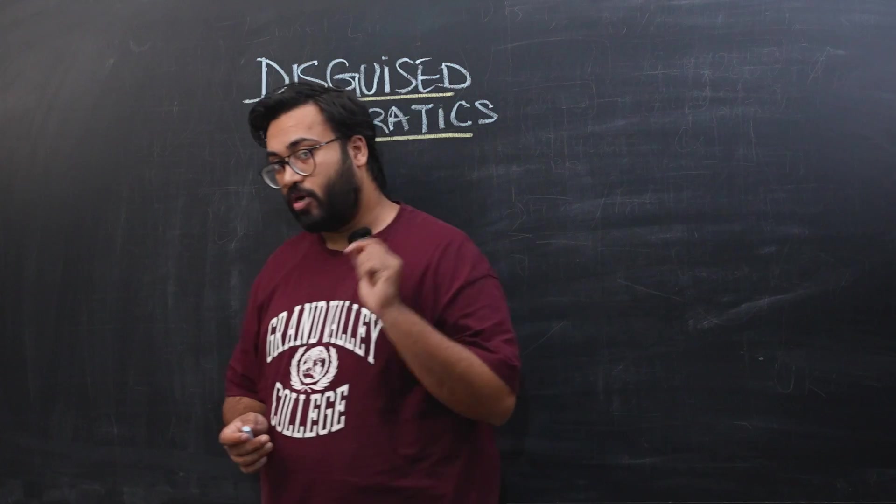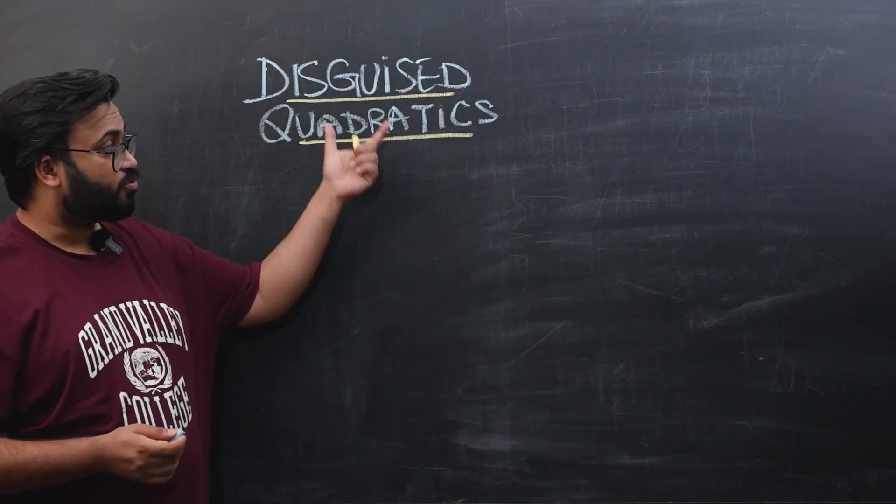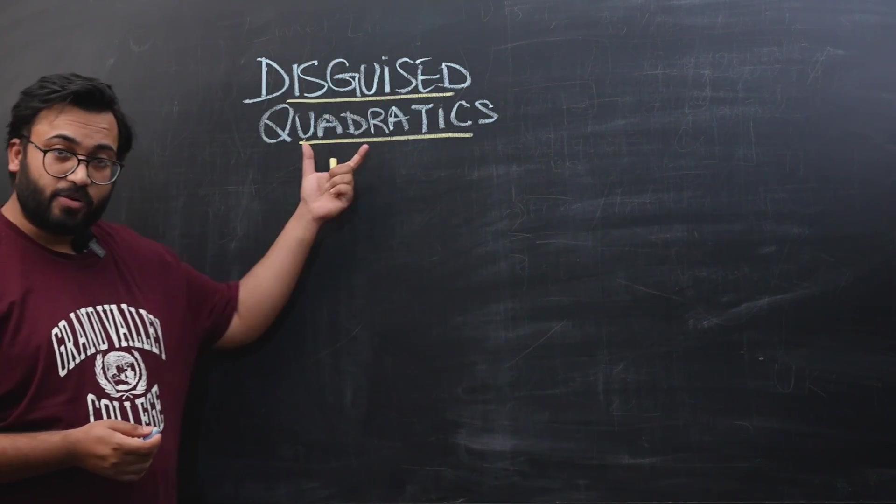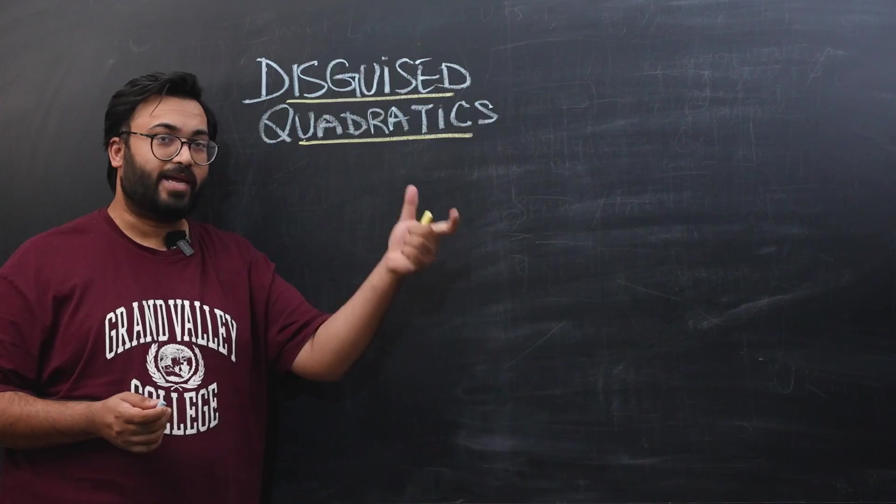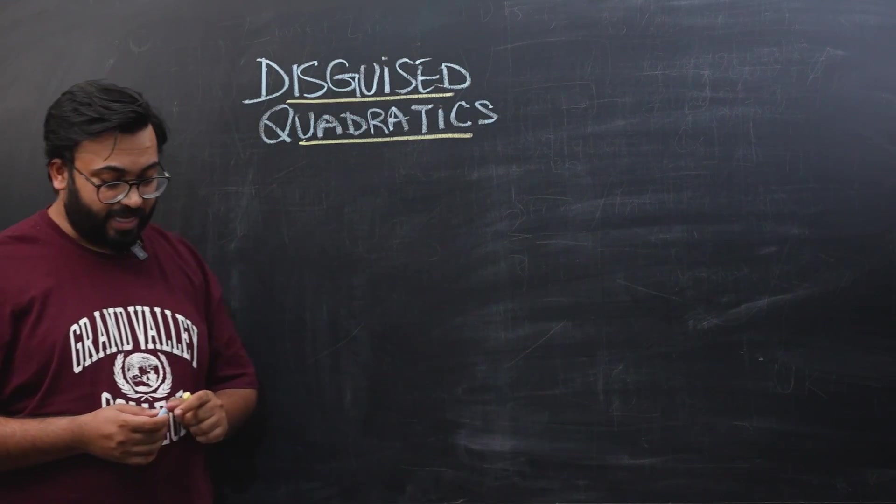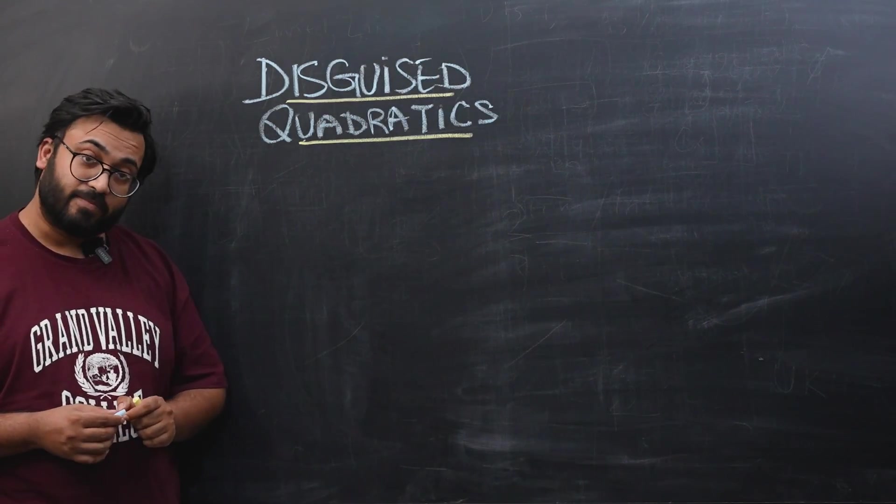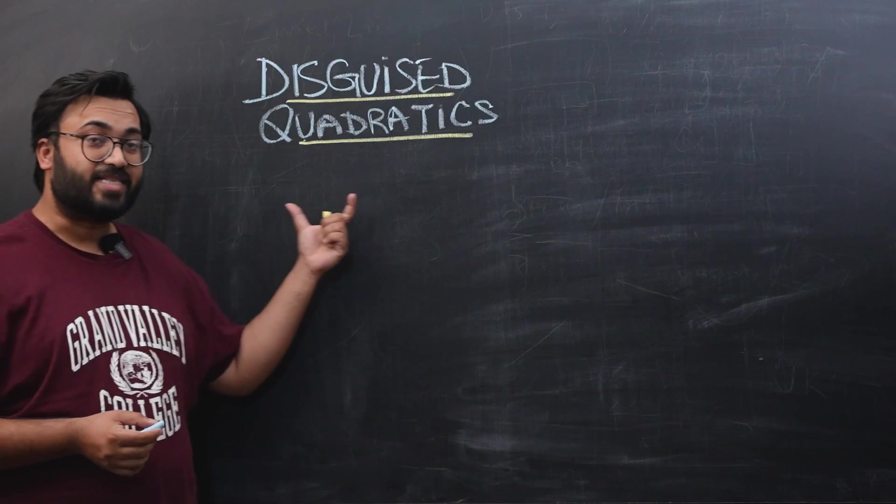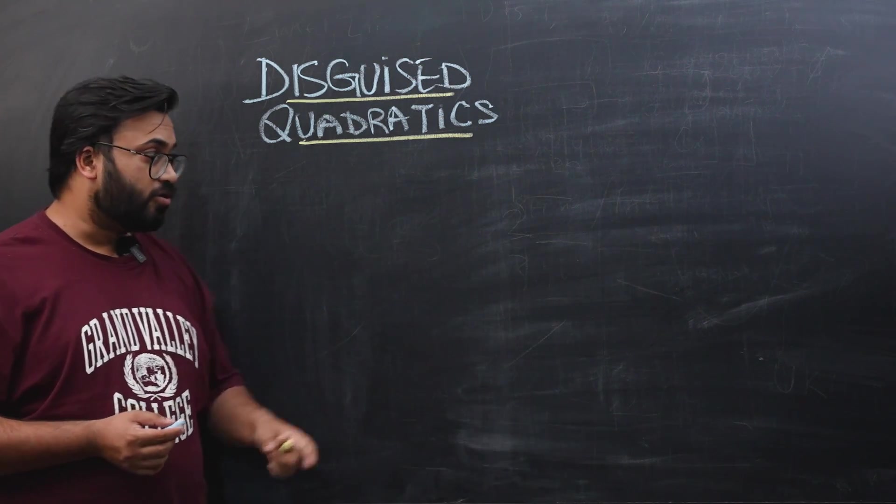What we're going to learn today is disguised quadratics, which are quadratic equations which do not look like quadratic equations, but in reality, they are quadratic equations. They're disguised as something else. First of all, let's learn a pattern of how they look like.